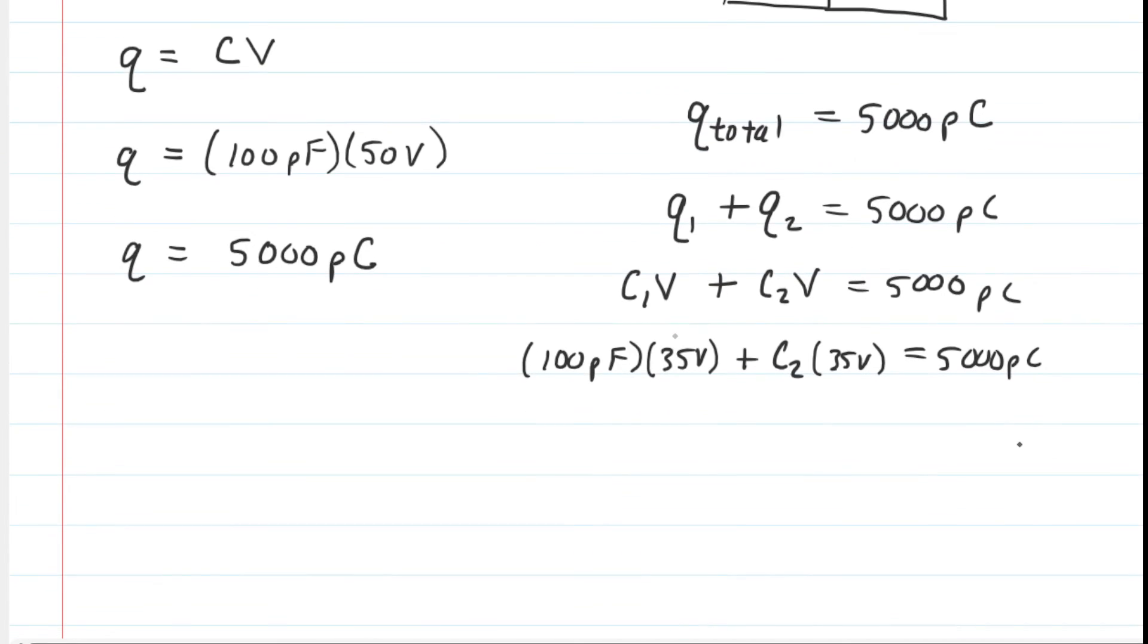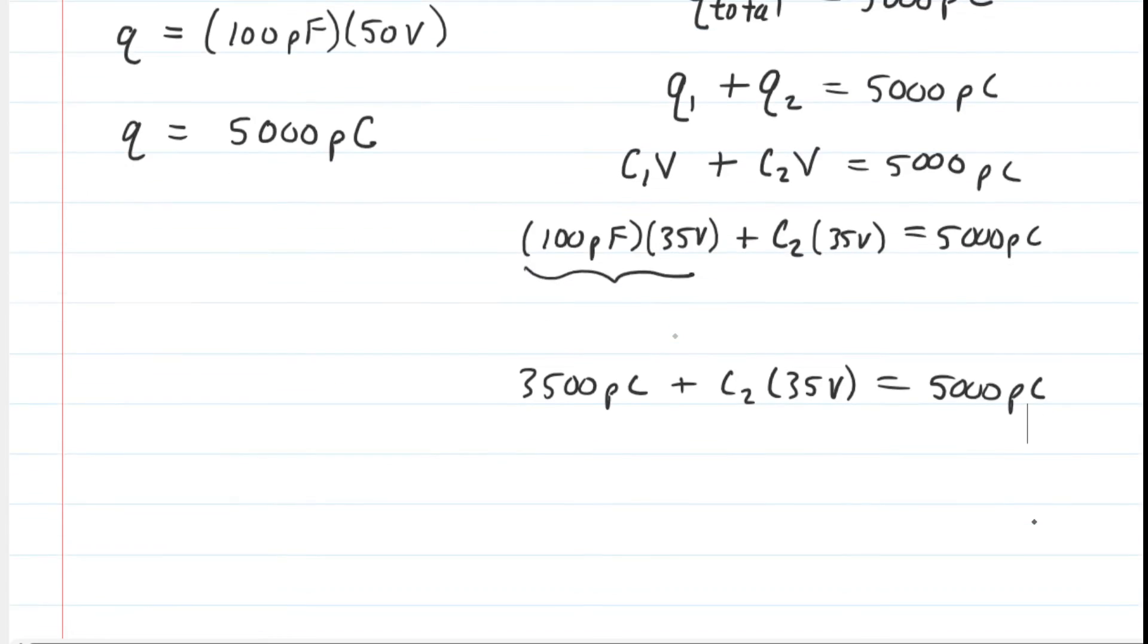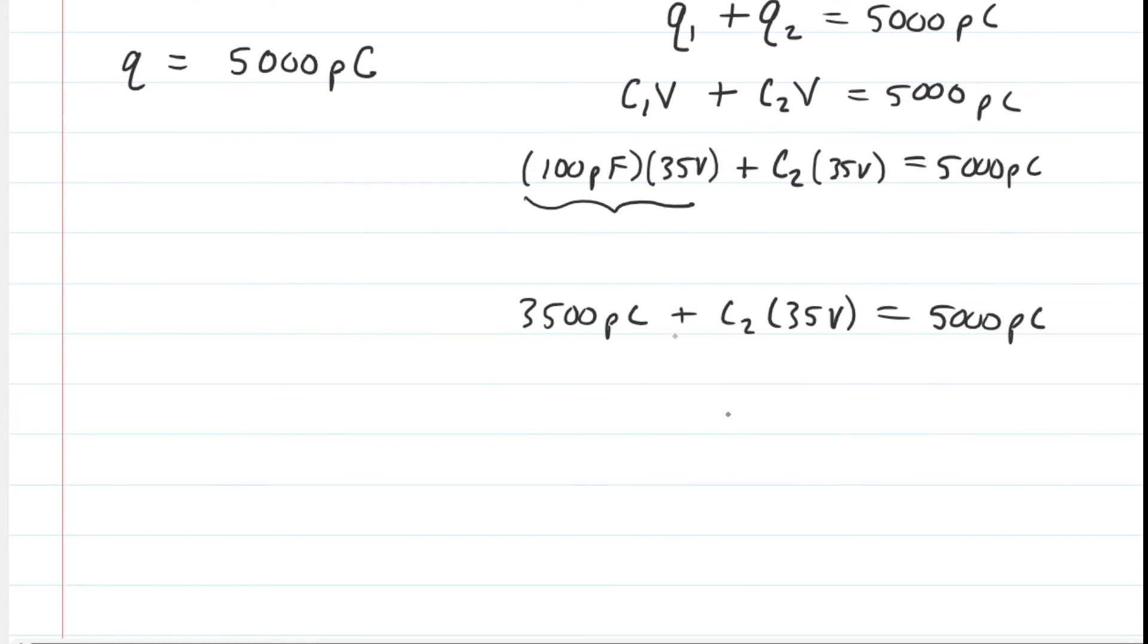Now, it's just a simple algebra problem. We can multiply these two values together. We could subtract the 3500 picocoulombs from both sides.